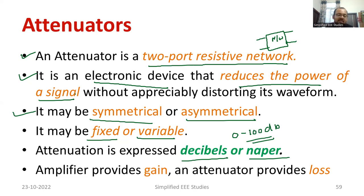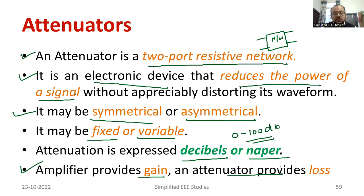As mentioned, amplifier provides the gain where attenuator provides the loss — both are opposite. Attenuator is one of the popular signal conditioning devices.